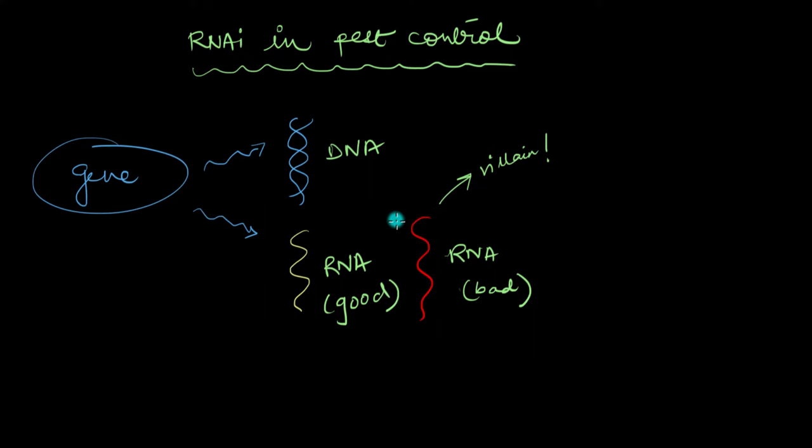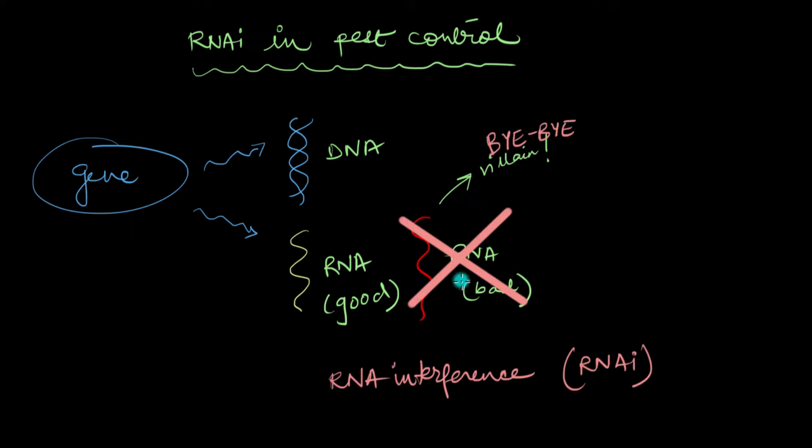Some of them are straight up villains, but every organism has this super specific defense mechanism called RNA interference which takes care of all of these troublemakers, all of these really bad RNAs like the viral RNAs or even the cancer-inducing microRNAs.